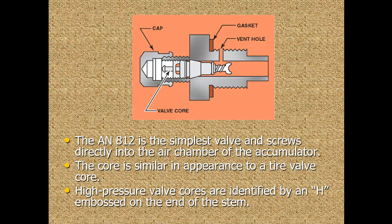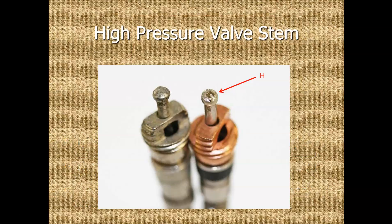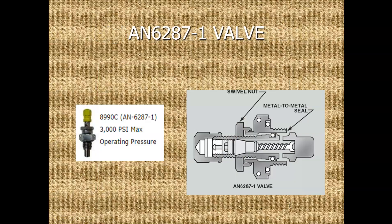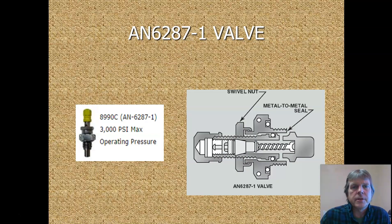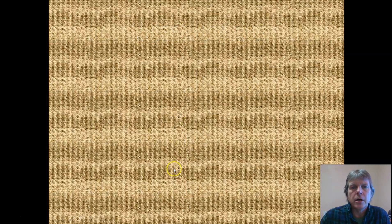This is a picture of the AN-812. This is the real simple one. You hook up the hose, and you just charge it. High-pressure valve cores will see an embossed H on the end of the valve stem. And this takes a special valve stem that's in here, but this H means that this is going to be a high-pressure valve stem. It's usually in the 3,000 and 5,000 psi systems. This is the other style, the 6287-1, a 3,000 psi. It has the swivel nut, and it will have the H on the valve stem.